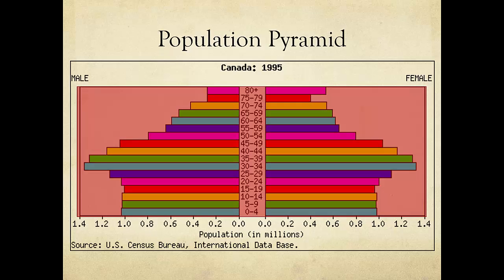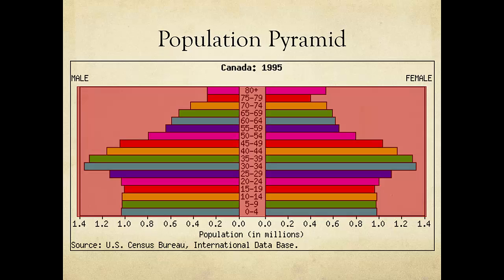Now that we understand the basics of population pyramids, we can begin to analyze them. There are three typical shapes that population pyramids take. In this image, you can see that the shape of the pyramid depends on the number of people in each age group.